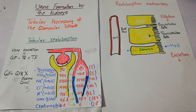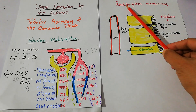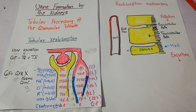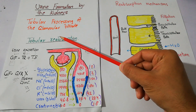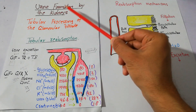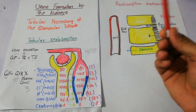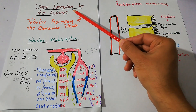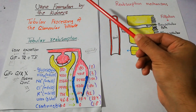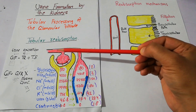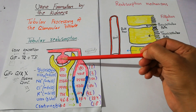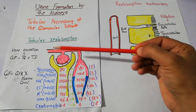Today in this lecture we are going to talk about concepts related to reabsorption mechanisms in the nephron tubules. In the last lecture we started discussing tubular reabsorption, which is an important step in urine formation by the kidneys. When the urine formation process begins, initially there is filtration of fluid in the nephron, and after filtration the next step is tubular reabsorption.